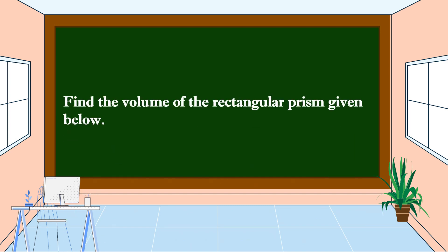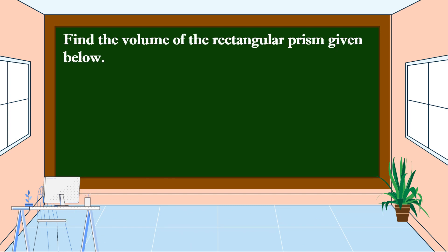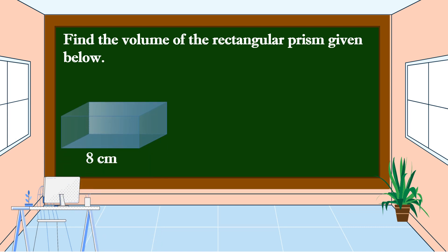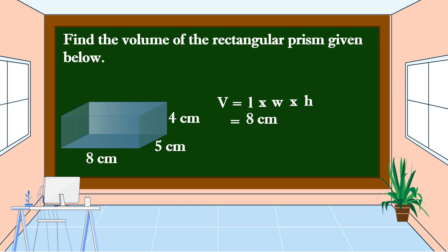Another example: find the volume of the rectangular prism given below, with a length of 8 centimeters, a width of 5 centimeters, and a height of 4 centimeters. To get the volume, we're going to use the formula: volume is equal to length times width times height. The length is 8 centimeters, the width is 5 centimeters, and the height is 4 centimeters.